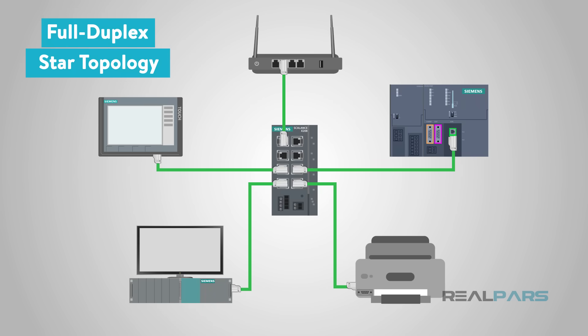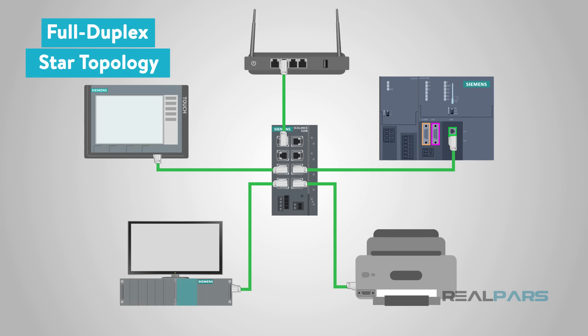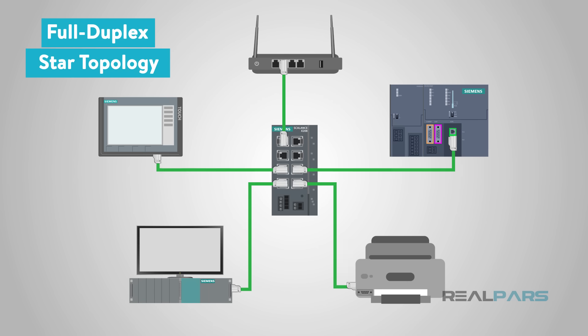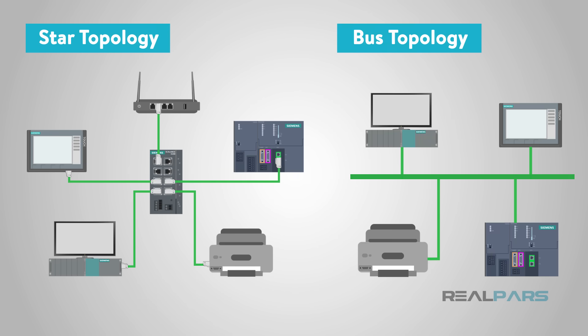When you use the faster Ethernet and full duplex modes and incorporate switches, you are utilizing a star topology between the switch ports and the devices. This allows for more direct transmission paths and fewer collisions, as compared to a bus topology where all devices share the same paths.